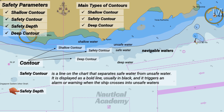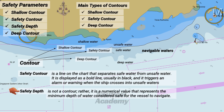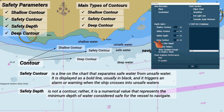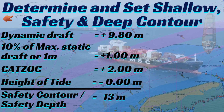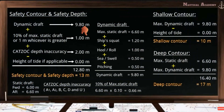Safety depth is not a contour. Rather, it is a numerical value that represents the minimum depth of water considered safe for the vessel to navigate. This value is usually calculated in accordance with the company guidelines and procedures. If you're not yet familiar with how to determine these safety parameters, I have made a separate video explaining the process — please check the link in the description. Always remember, these procedures serve only as a guide; you should always follow your company's policy and guidelines when calculating the safety parameters.